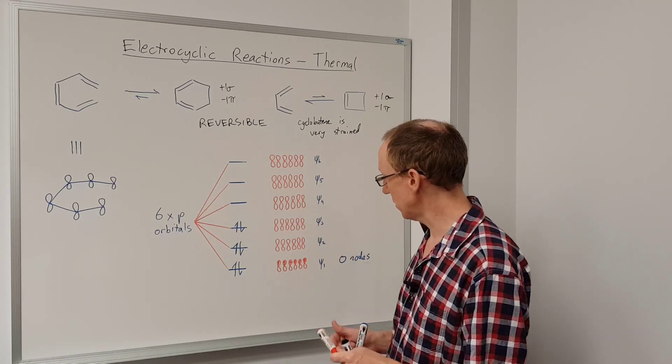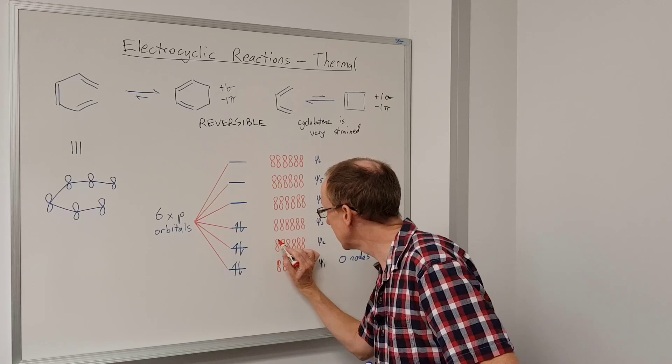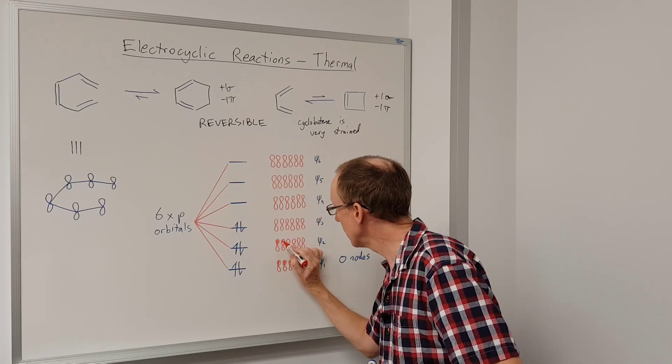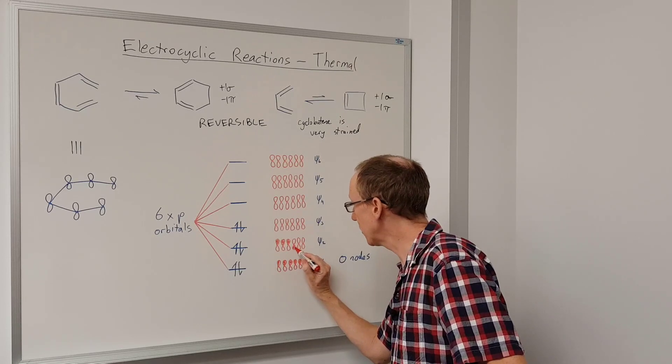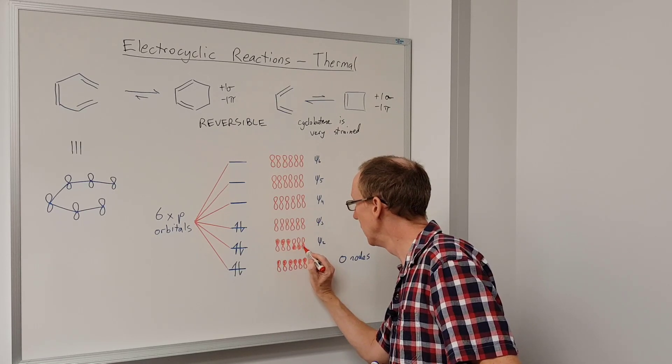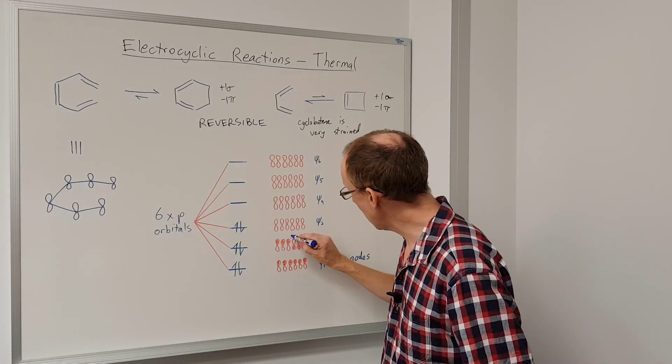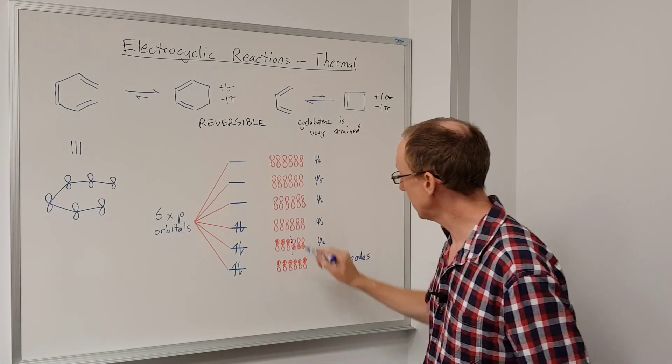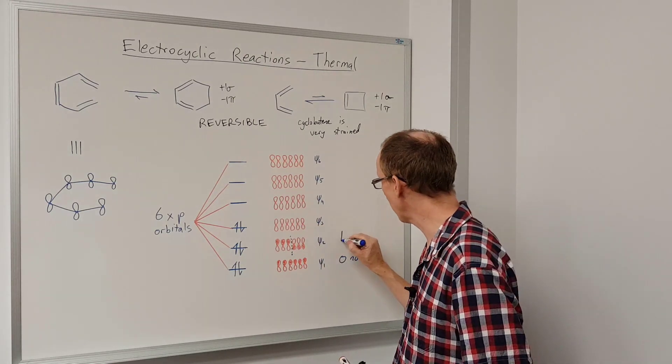So let's show that with the second one here, psi two. If we draw out the atomic orbitals there, the first three will be in phase, and the second three will be in phase with each other. But between those two sets of three, we're going to have a node. So that's a non-bonding or anti-bonding interaction. So we've got one node.